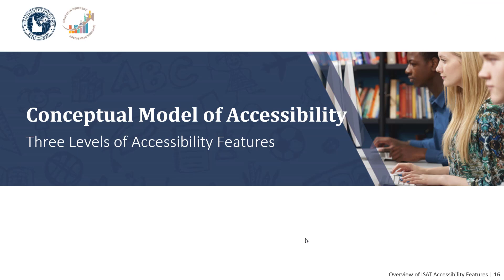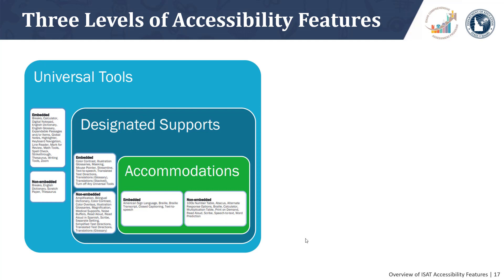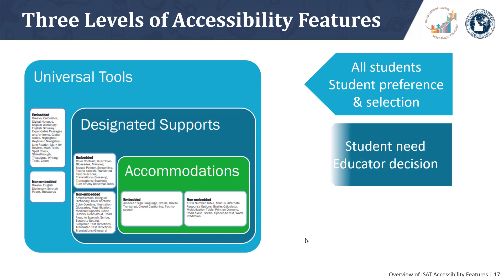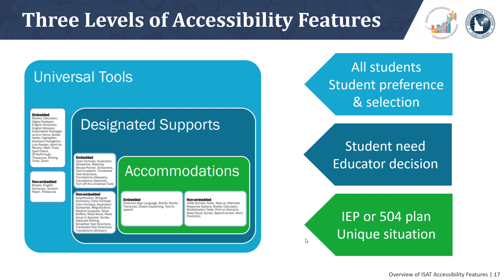Now for a few words about the conceptual model that Smarter Balanced developed to articulate three levels of accessibility features. This nested image of Universal Tools, Designated Supports, and Accommodations appears on page 7 of the UWAG. Universal Tools are accessibility features available to all students based on student preference and selection. Designated Supports are available for students who have a need, indicated by an educator or a team of educators that includes a parent or guardian and the student when appropriate. Accommodations are available when the need is documented on an IEP or 504 plan, or in unique circumstances when a student may not typically require an accommodation but may make use of one.